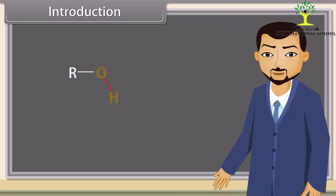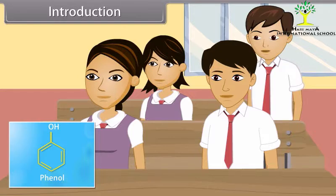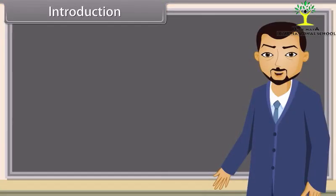Can anybody tell me what is phenol? Yes teacher. Phenol is an organic compound where one hydrogen attached to a benzene ring is replaced by a hydroxyl group. Very good, Sunil. In this lesson we will learn about alcohols, phenols and ethers.